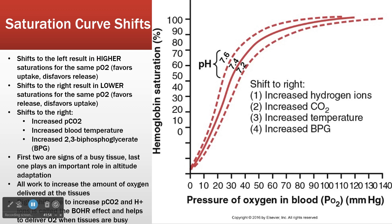So why do we get shifts to the right? There are a couple of reasons. Number one, hydrogen ions — pH changes everything, and it goes both ways on that one. Increased CO2 does that too. Number one and two together we call the Haldane effect — there's a slide on that at the end. Increased temperature: as you get warmer, you dump oxygen more easily. And then increased BPG.